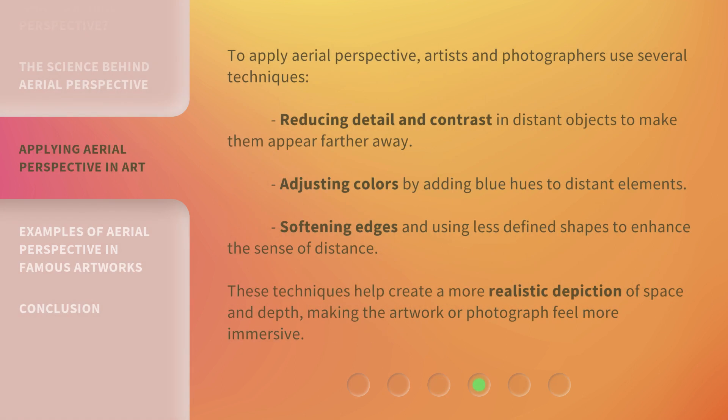To apply aerial perspective, artists and photographers use several techniques: reducing detail and contrast in distant objects to make them appear farther away, adjusting colors by adding blue hues to distant elements, and softening edges and using less defined shapes to enhance the sense of distance. These techniques help create a more realistic depiction of space and depth, making the artwork or photograph feel more immersive.